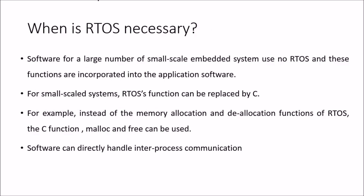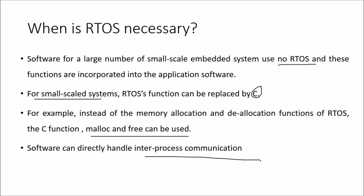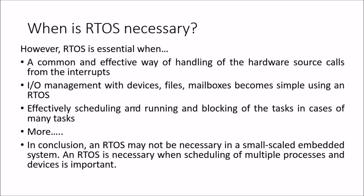When do we need an RTOS? Software for a large number of small-scale embedded systems uses no RTOS — those functions are incorporated into the application software. For small-scale systems, RTOS functions can be replaced by simple C; for example, instead of memory allocation and deallocation functions of the RTOS, the C functions malloc and free can be used, and software can directly handle IPC. However, when handling hardware source calls, I/O management with devices, files, and mailboxes, an RTOS becomes essential, as does effective scheduling and blocking of tasks when many tasks are involved.